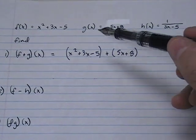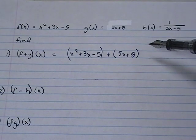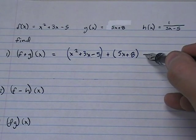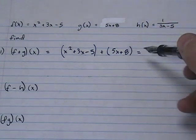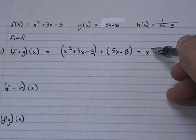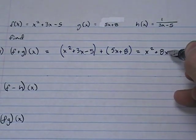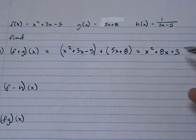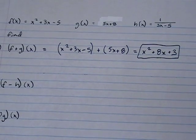This is the same as in most algebra books with a section on adding and subtracting with polynomials. To add polynomials, all you do is combine like terms. x squared does not have a like term. 3x plus 5x makes 8x, and negative 5 plus 8 makes 3. So we get x squared plus 8x plus 3.